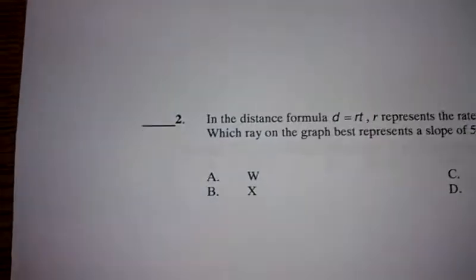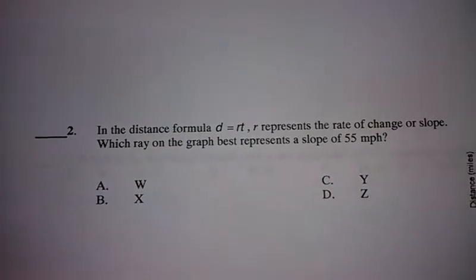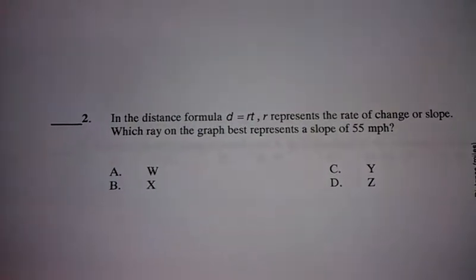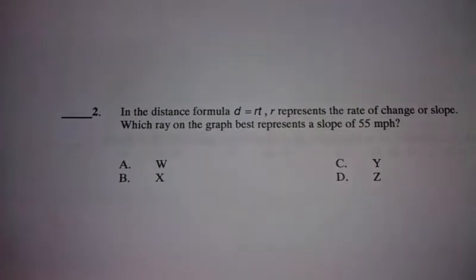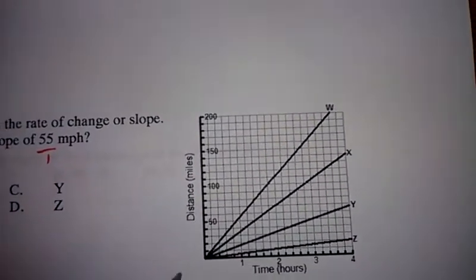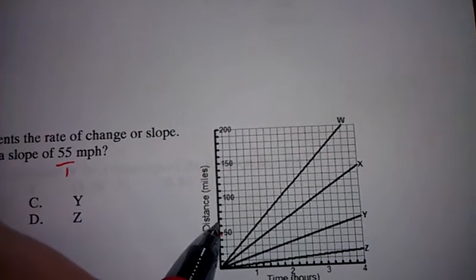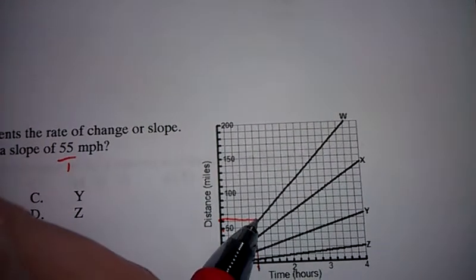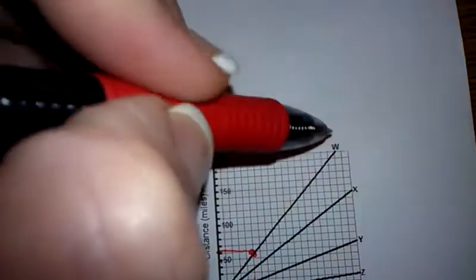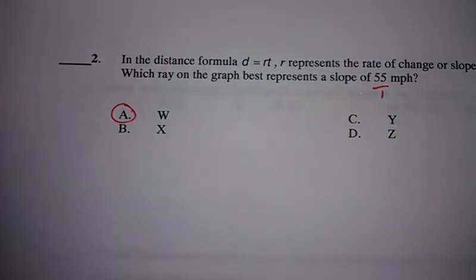For the next problem it says in the distance formula d equals rt, r represents the rate of change or slope. Which ray on the graph best represents the slope of 55 miles per hour? That's 55 over 1 so I'll go over here to my graph and I'll go up, there's 50, up 55 and over to where the 1 is put a dot that is ray w so your answer should be A.